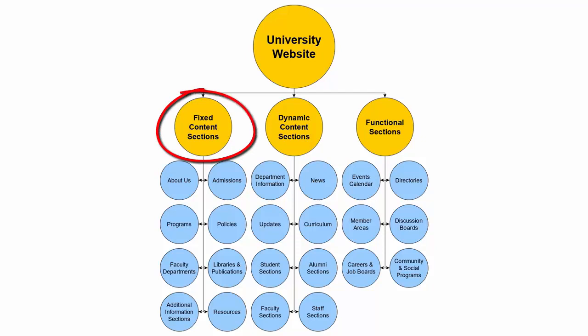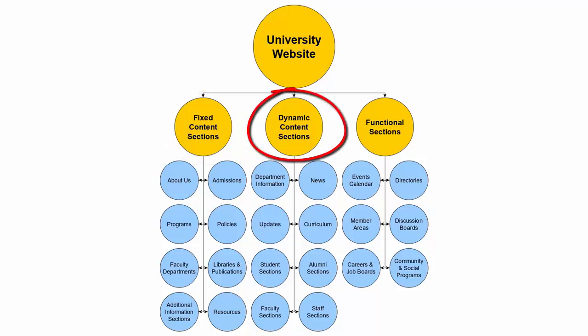Fixed content sections of the website — such as admissions, about us, programs, policies, content descriptions for faculties, libraries, resources, and publications — contain information that is unlikely to change or only gets updated every so often. Dynamic content sections such as departmental information, news, research findings, program deadlines, and curriculum information need regular publishing and updating.